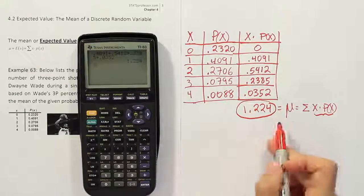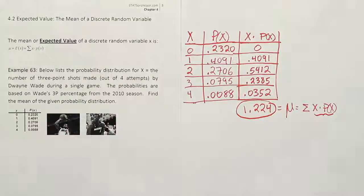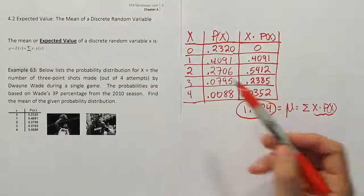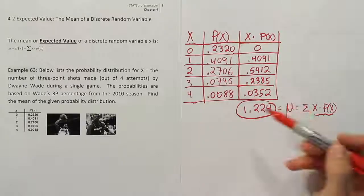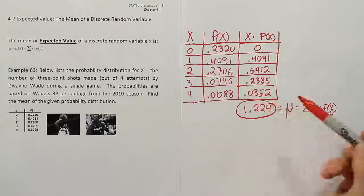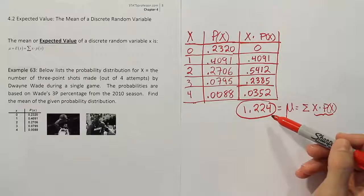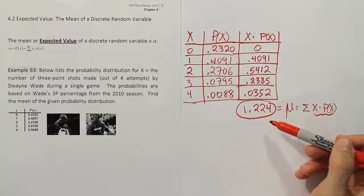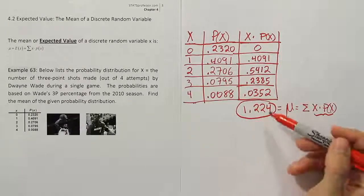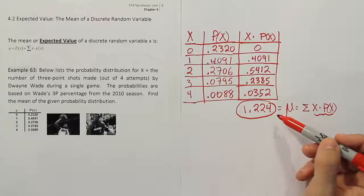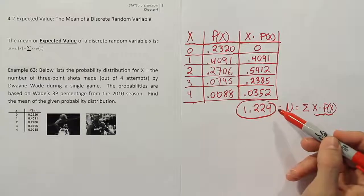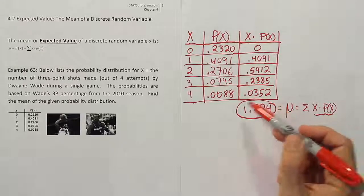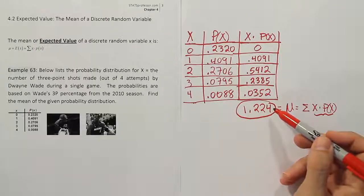So what do we do to interpret this? Well, basically, we're saying that over the course of a game, if Dwayne Wade shoots 4 three-point shots, he will end up making roughly 1.2 of them on average. Now, of course, you can't make 1.2 shots, but on average, you can make 1.224 shots. So basically, this number is pretty close to 1.